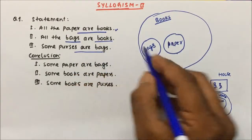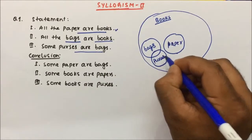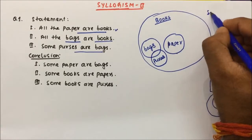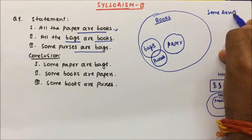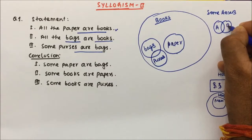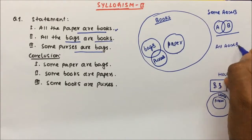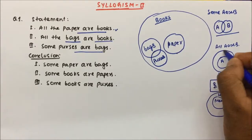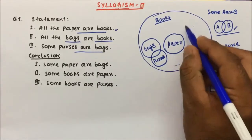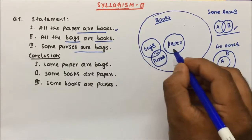And now some purses are bags. How do we make 'some purses are bags'? In Part 1 I explained: if some A are B, then some part of A will overlap some part of B. If all A are inside B, then all A will be inside B. On the same way, all the papers are inside the books, all the bags are inside the books, and some purses are sharing with bags.